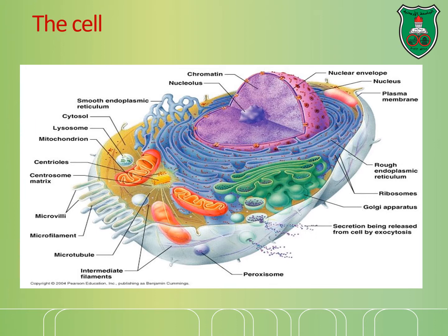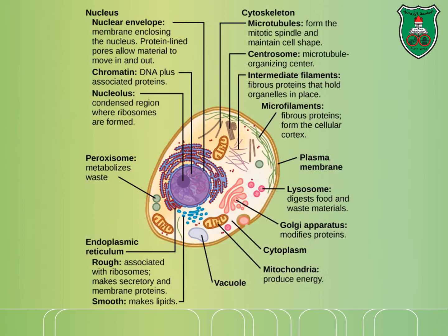This is an illustration of the cell with all its different components. Each component has certain functions, and it's quite complex and amazing how the whole cell is organized. The different parts we will be talking about include the nucleus, nuclear envelope, chromatin and DNA, peroxisome, mitochondria, the endoplasmic reticulum, the Golgi apparatus, lysosomes, the plasma membrane, and the different types of filamentous structures that make up the cytoskeleton. We will not talk about vacuoles or chloroplasts, as those are found in plant cells.